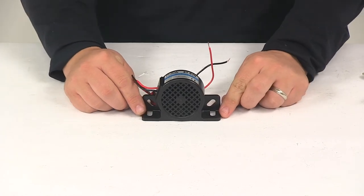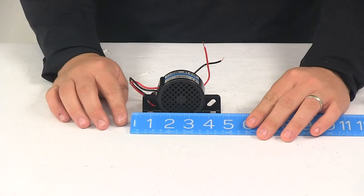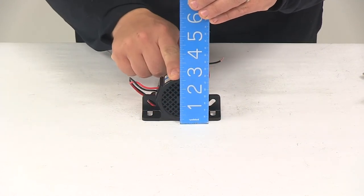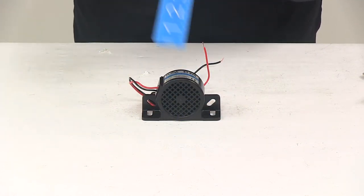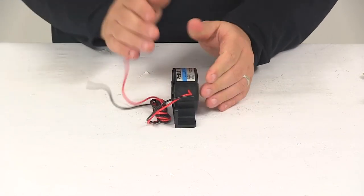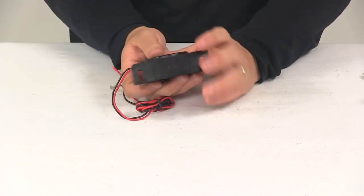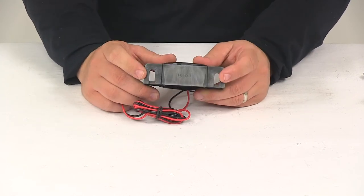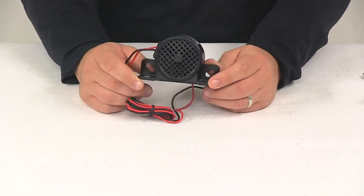Taking a look at some of the dimensions, going this direction, it's going to measure edge to edge about four and one eighth of an inch. Overall height is about two and a half inches tall. Front to back, the thickness is only about an inch and a quarter. The mounting holes are separated on center by three and one quarter inches, and they measure a quarter of an inch wide by half inch long.